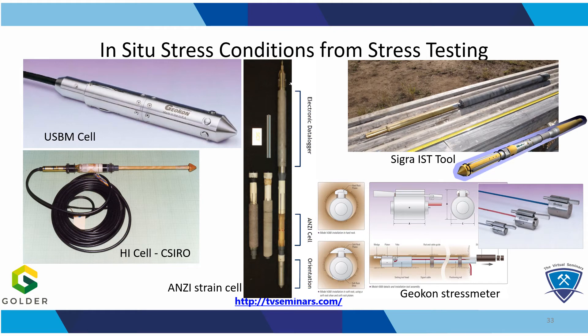These are some of the available stress measurement techniques. The USBM cell, the hollow inclusion cell from CSIRO — that's a 3D stress tensor measurement — the ANSY strain cell, also a 3D measurement, and the CIGR tool, similar to the USBM cell. They both measure stress in two dimensions. And then you've got stress meters that you can install in boreholes on underground excavations to look at the change in stresses as you advance an excavation or a mine — these tend to be one-dimensional.